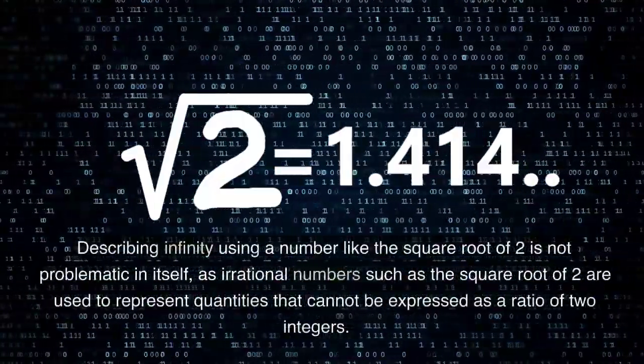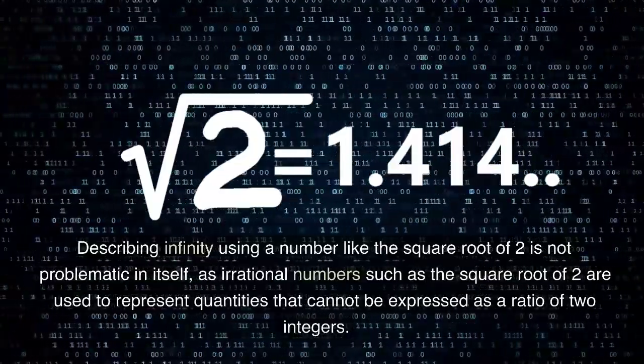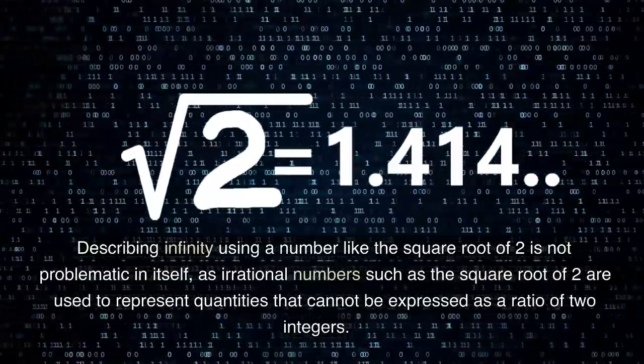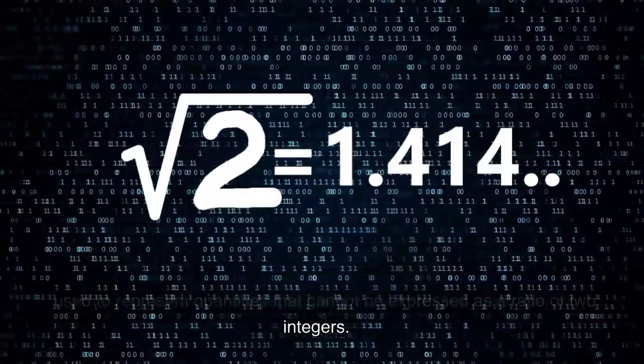Describing infinity using a number like the square root of two is not problematic in itself, as irrational numbers such as the square root of two are used to represent quantities that cannot be expressed as a ratio of two integers.